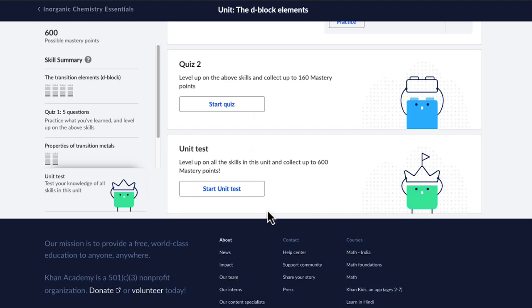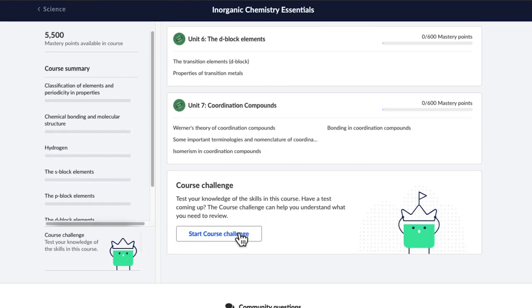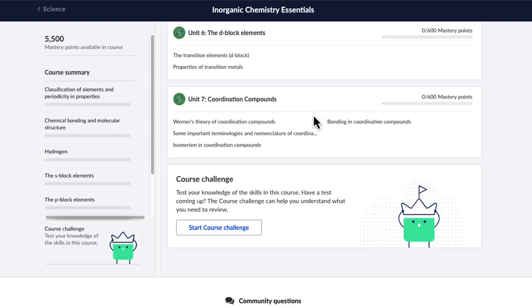And then once you have mastered all the units, you can take a course challenge, which will jumble all the questions from all the different units to give you complete mastery over the entire course.